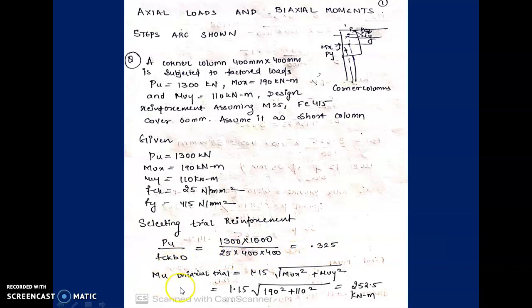As we have two moments, according to the code we combine them as: Mu = 1.15 × √(Mux² + Muy²). Substituting, 1.15 × √(190² + 110²) = 252.5 kN·m. This combined moment is used to find Mu/(fck·B·D²).